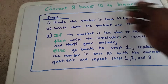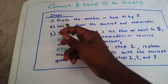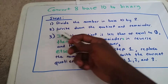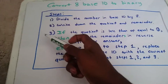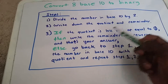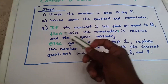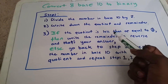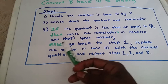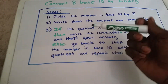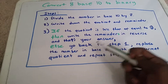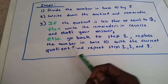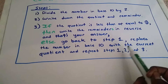Here are the steps we can use to do that. In step 1, we divide the number in base 10 by 2. In step 2, we write down the quotient and the remainder. In step 3, if the quotient is less than or equal to 0, we write the remainders in reverse and that's our answer. Else, if the quotient is not less than or equal to 0, we go back to step 1, replace the number in base 10 with the current quotient, and repeat steps 1, 2, and 3.